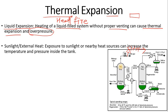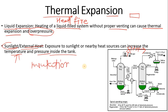Sunlight as an external heat source is less significant, but external fire is considerable — it is considered when we size the PSV and also when we size the vessel. Exposure to sunlight or a nearby heat source can increase temperature and pressure inside the tank. For temperature control, we provide insulation — there are three main types: cold insulation, hot insulation, and personal protection insulation.